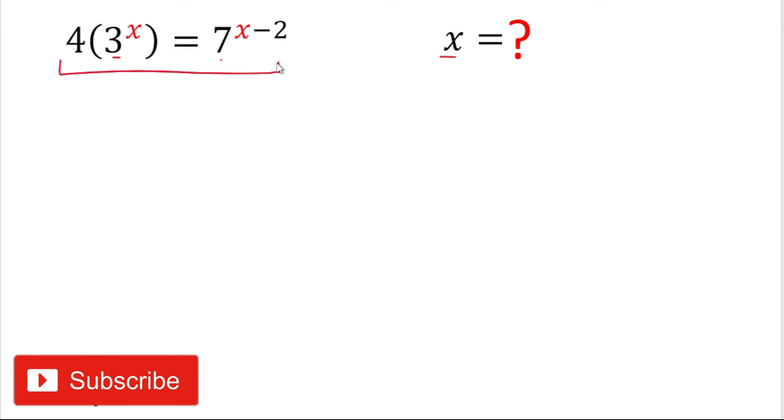For solving this problem, first of all we'll simplify the equation. For simplifying the right hand side, it is in the form of a to the power m minus n, and we can write it as a to the power m divided by a to the power n.